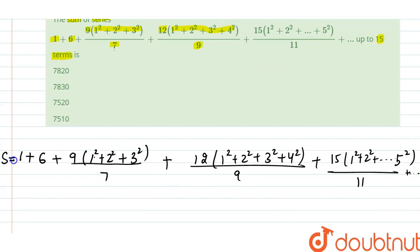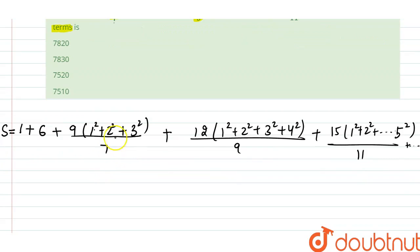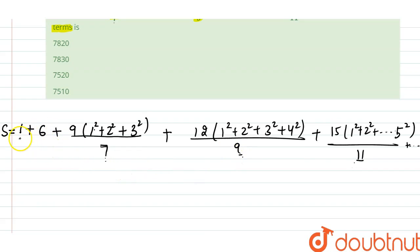Let us denote this by capital S. If we look at the pattern of this series, the denominator has 7, 9, 11 and so on — there is a difference of 2 between odd numbers. So we will try to make the first two terms also follow this pattern of difference of 2, making the denominators 5 and 3 respectively.